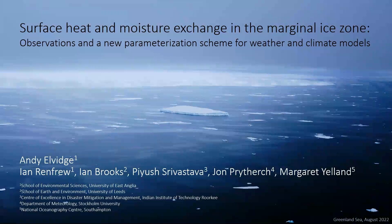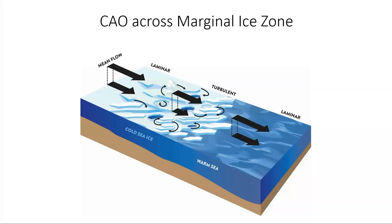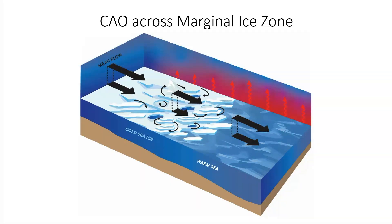Marginal Ice Zone observations and a new parameterization scheme for weather and climate models. The Marginal Ice Zone is the transition between consolidated ice and open ocean. It's a very rough region — there are vertical edges in the form of the edges of ice floes and leads. This roughness means that when you pass air over the surface, you get the generation of turbulence in the boundary layer associated with a drag force exerted on the flow, and also with the generation of turbulent scalar fluxes of heat and moisture.